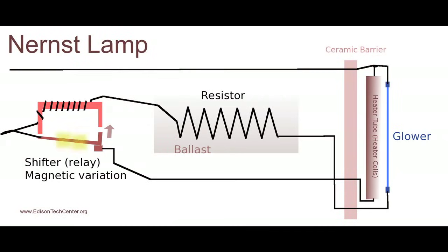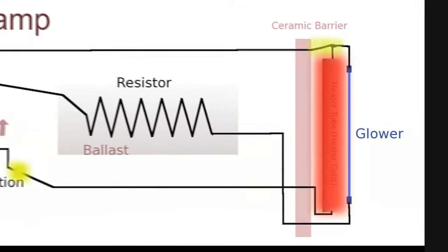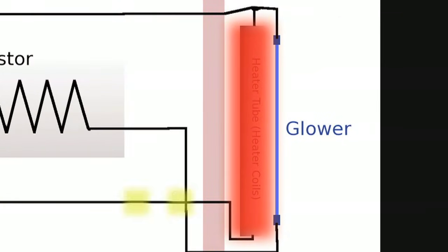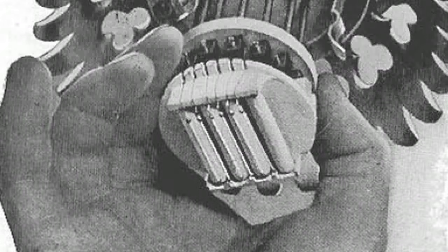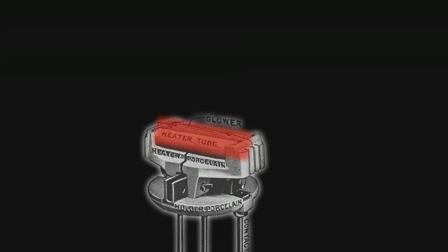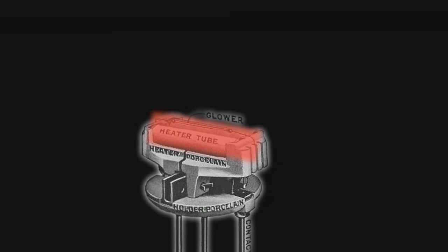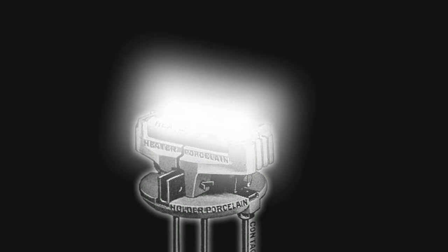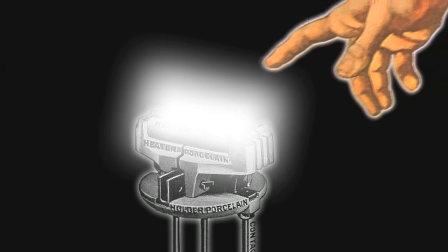How the lamp works is when the current is switched on, the glower will not conduct electricity when it's cold because it's an oxide. It has to be heated before it will conduct electricity. So the heater would turn on and glow red and heat up this little glower until it reached a temperature where it would conduct electricity. Then the glower would start to conduct and become incandescent and produce a bright white light, pretty much like a modern tungsten filament light bulb does.